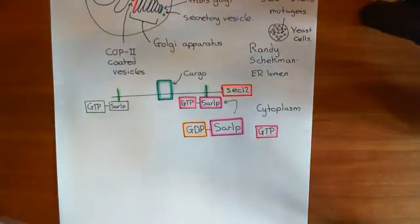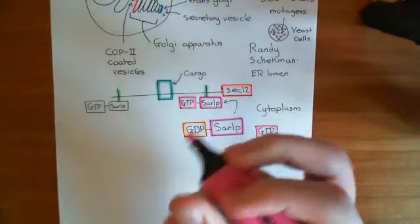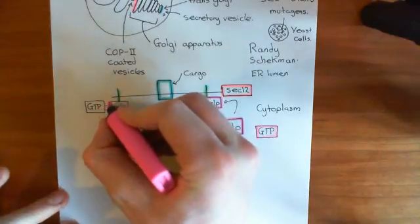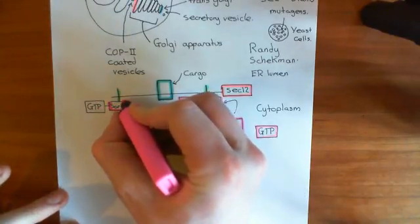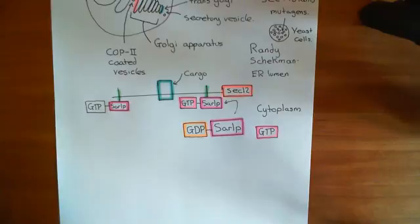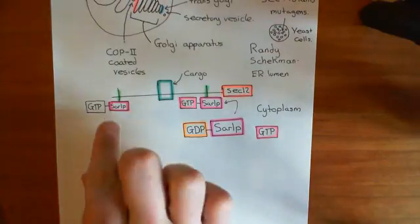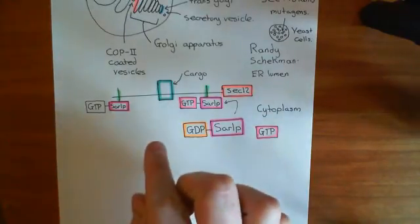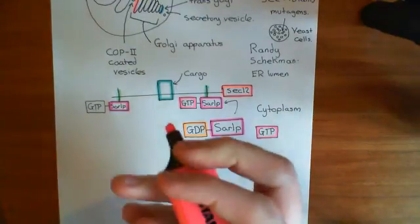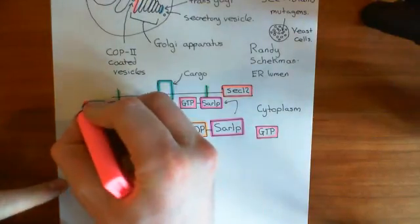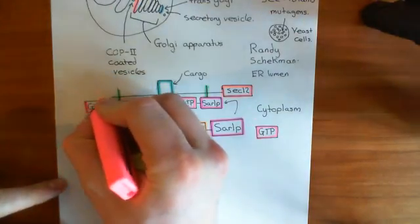So what it's going to now do is, once I've just coloured it in, it's going to bring other proteins that are going to come and bind to it and form a great big protein complex. And I'll give you a clue, this is going to be the COP-2 protein complex. So SAR 1p is the starting point for the COP-2 protein complex.